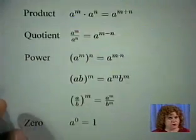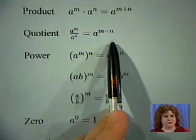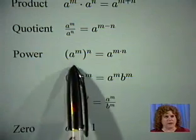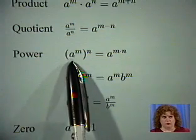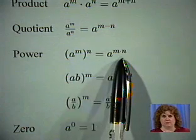The quotient rule is similar, except that we subtract the exponents. With our power rules, if we have a power raised to a power, we multiply the exponents.